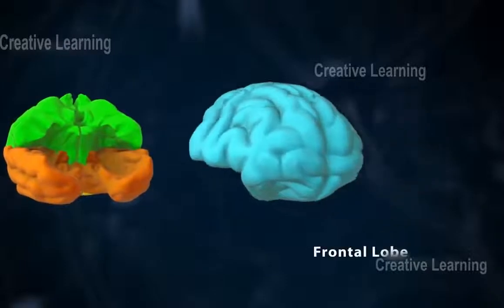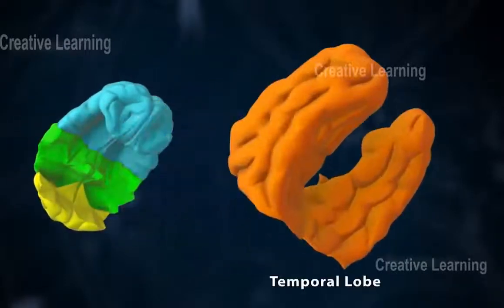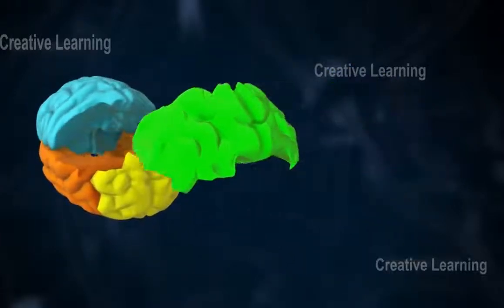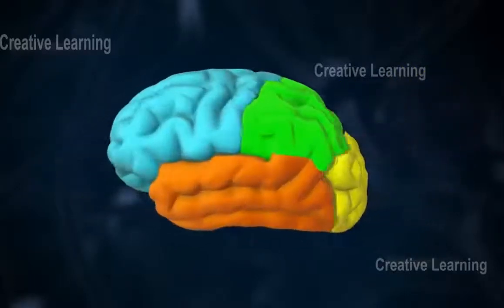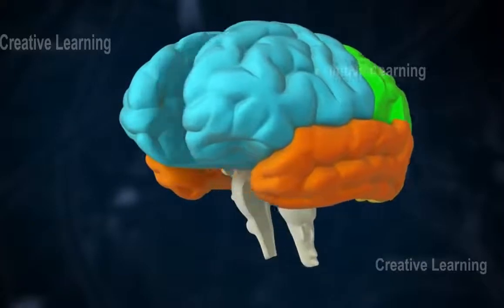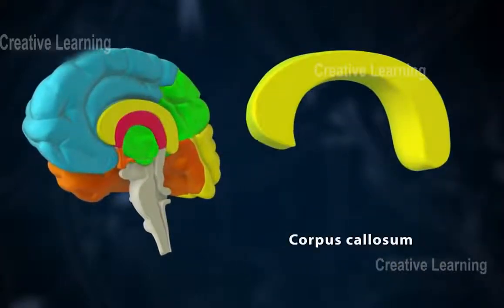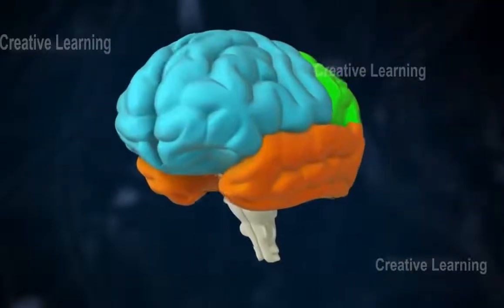Each is composed of a frontal, temporal, parietal, and occipital lobe. The two hemispheres are connected by a nerve tract called the corpus callosum.